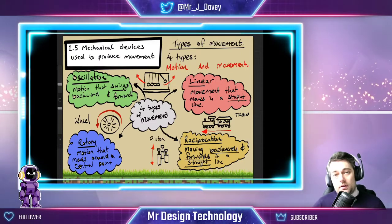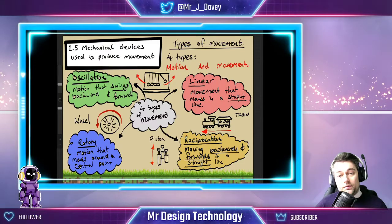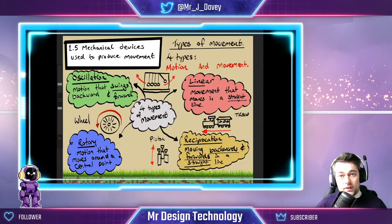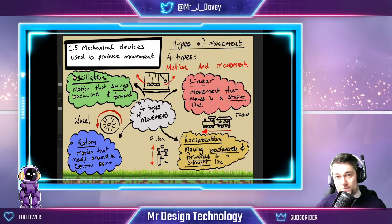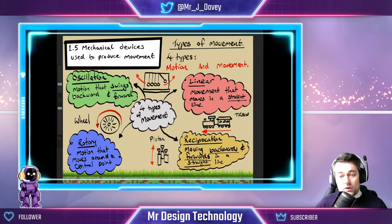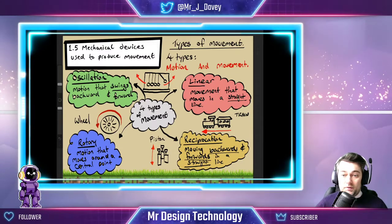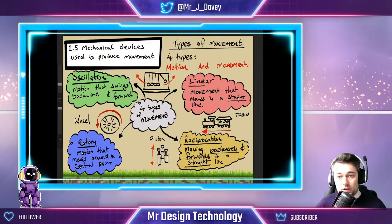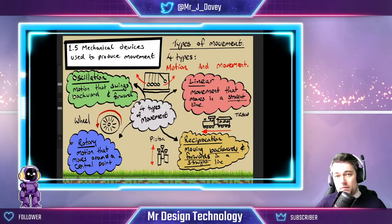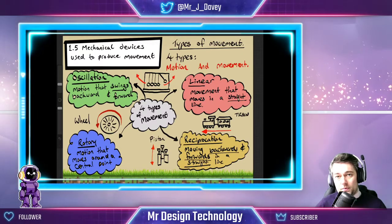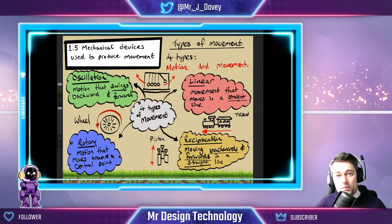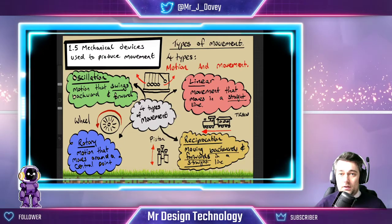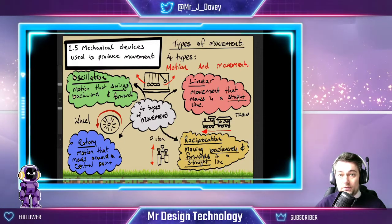In this session we've identified the four types of movement you'll come across in design technology: linear, oscillation, reciprocation, and rotary. We've described what those movements do, given an example of each one, drawn an example of each one, and colour coded everything to create a revision resource you can use at home — maybe as a flashcard, something to cover up, or simply look back on. Stay safe until next time.